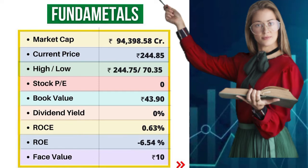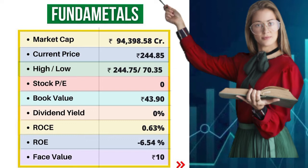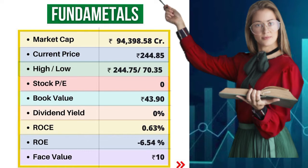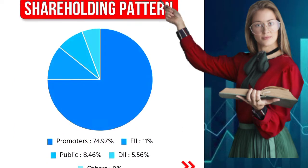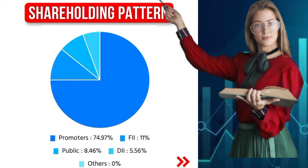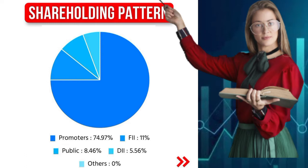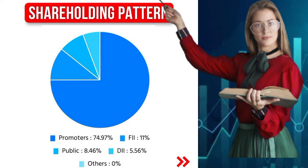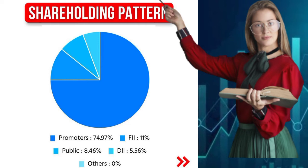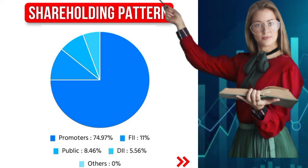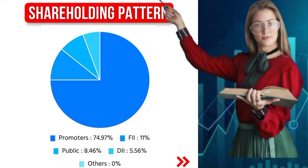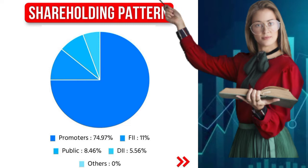Return on equity is minus six point fifty-four percent. Face value is ten rupees. Shareholding pattern: promoters seventy-four point ninety-seven percent, foreign individual investors eleven percent, public investors eight point forty-six percent, domestic individual investors five point fifty-six percent.